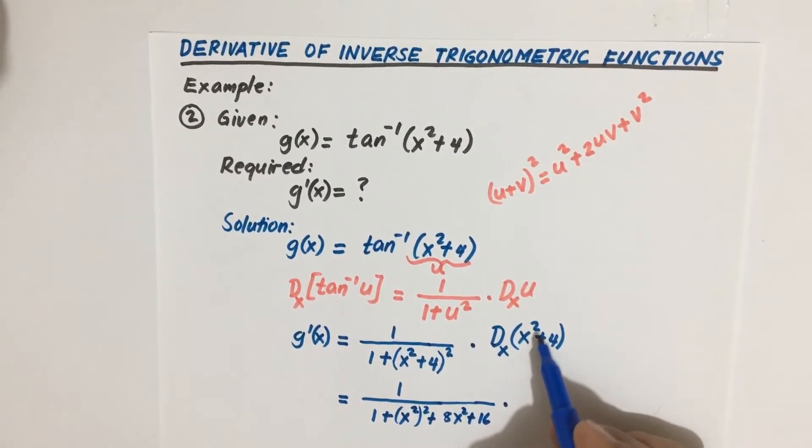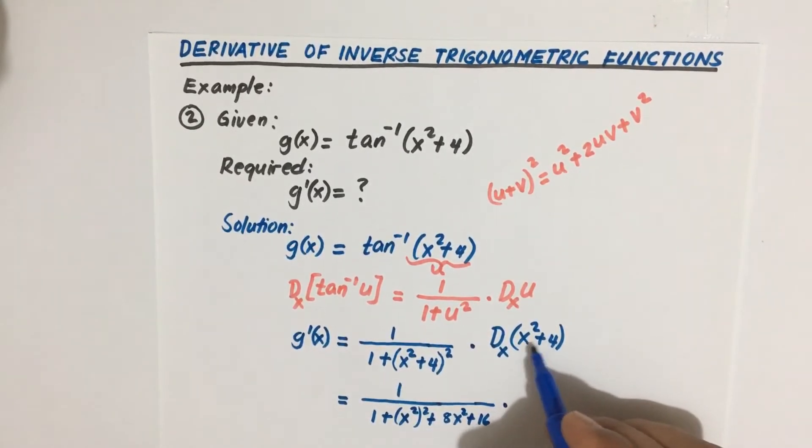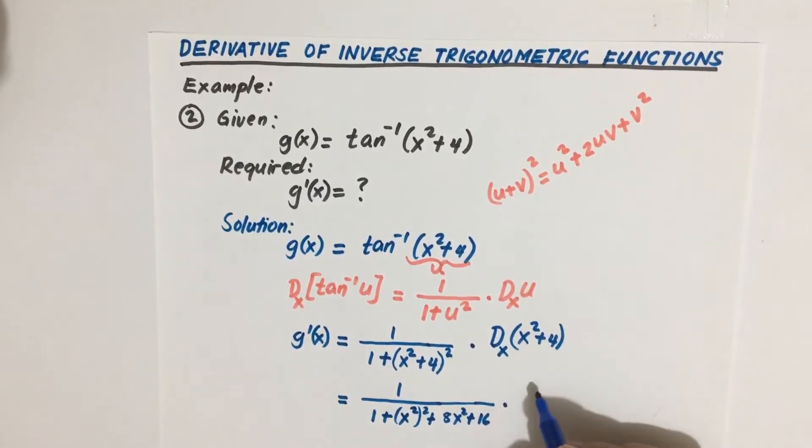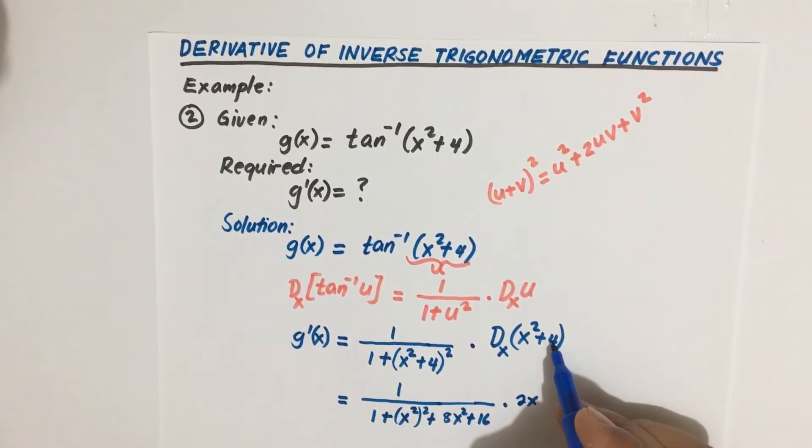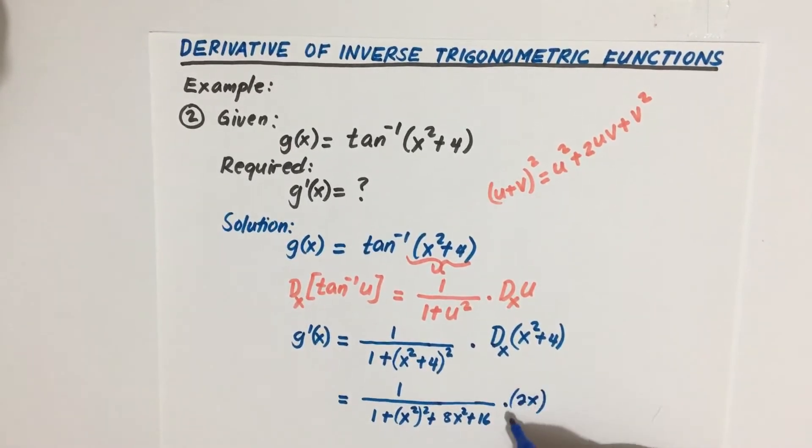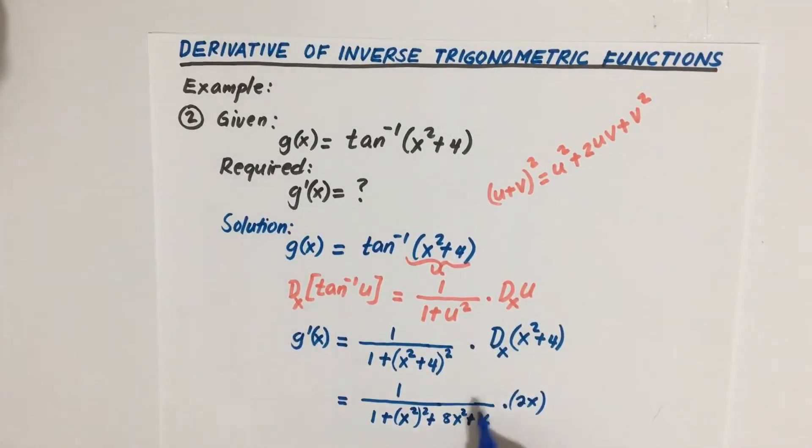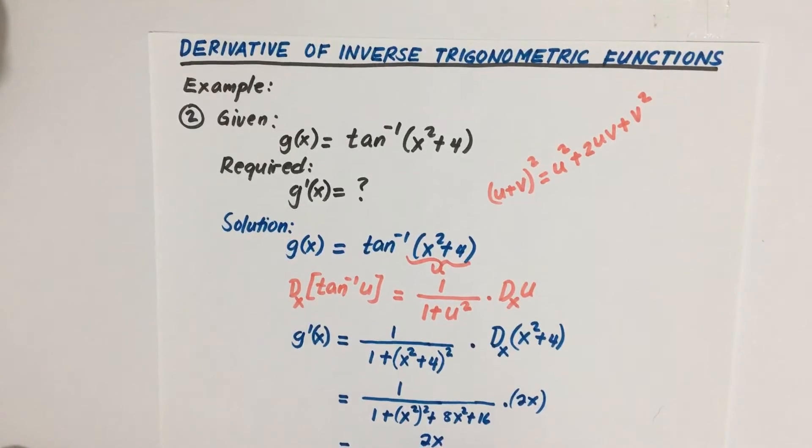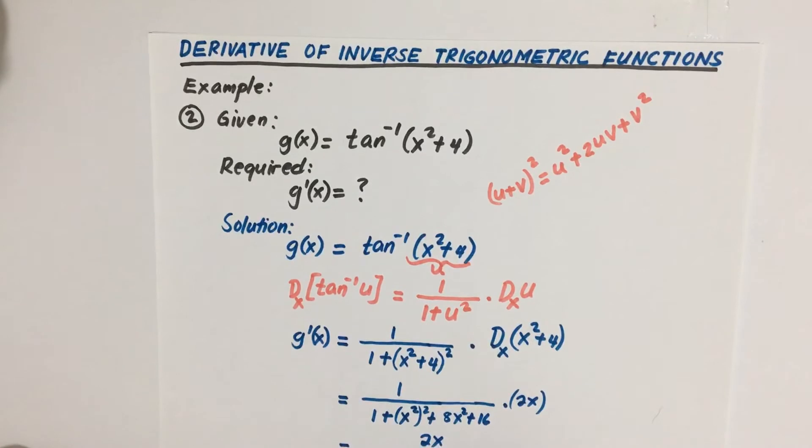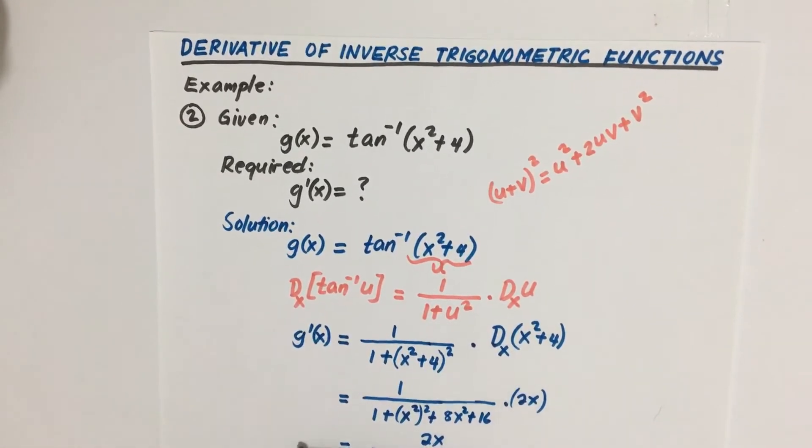So derivative of the sum, we have derivative of the first term that is 2x, derivative of 4 which is a constant, that is 0. So you can have only this 2x, so our numerator is 2x divided by 1 plus x to the fourth plus 8x squared plus 16. So this is our answer.